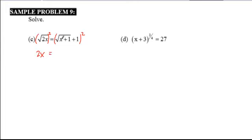That leaves you with 2x equals, and now this becomes a binomial square. You either need to write it out and FOIL it, or apply the pattern which is the first term squared, leaving just x plus 1, plus twice the product of these bases. So √(x+1) times 1 doubled is 2√(x+1), and we take our last term, 1 squared is 1.